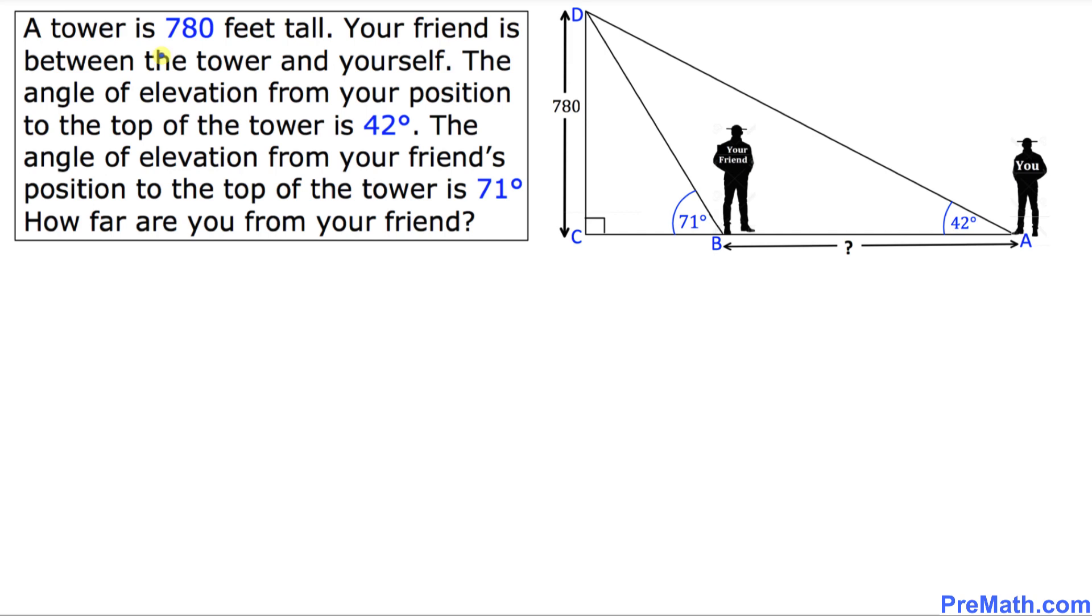Let's read this problem now. A tower is 780 feet tall. Your friend is between the tower and yourself. The angle of elevation from your position to the top of the tower is 42 degrees. The angle of elevation from your friend's position to the top of the tower is 71 degrees. How far are you from your friend?